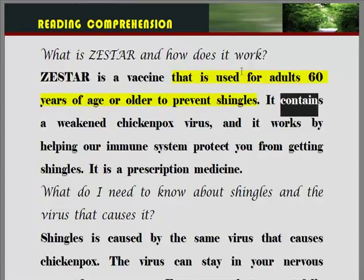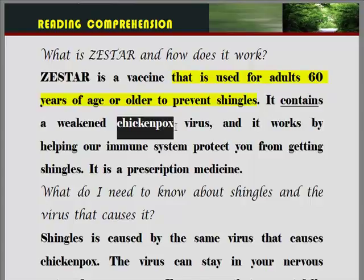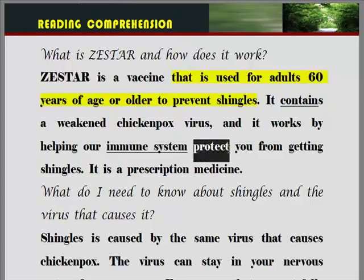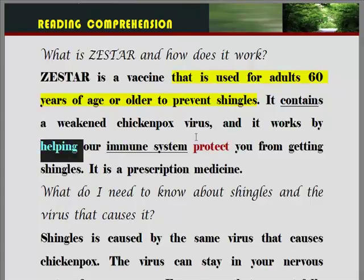contain, '포함하다'라고 하는 표현이죠. '그것은 무엇을 포함하고 있습니다.' weakened chickenpox — 약화된 수두 바이러스를 포함하고 있습니다. 그리고 그것은 어떻게 함으로써 작용을 합니다. 우리의 면역체계가 protect — 왜 갑자기 동사원형이 쓰였습니까? 바로 help라고 하는 동사 때문에 그렇죠. 물론 이 앞에 to를 써도 상관이 없습니다.